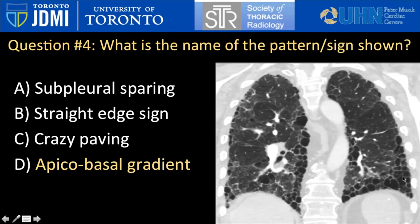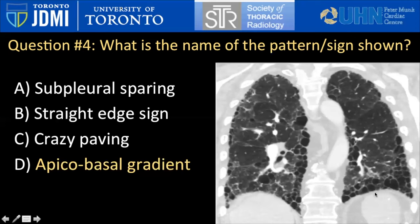If you have prior images to compare, honeycomb cysts can get bigger and increase in number over time, whereas that's typically not a feature of paraseptal emphysema. Smoking is often seen in older male patients with UIP pattern fibrosis, and there is often overlapping paraseptal emphysema as well as honeycomb cysts in a patient with both emphysema and pulmonary fibrosis in a UIP pattern.